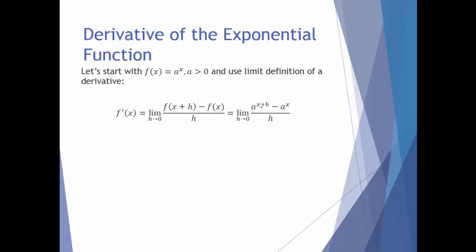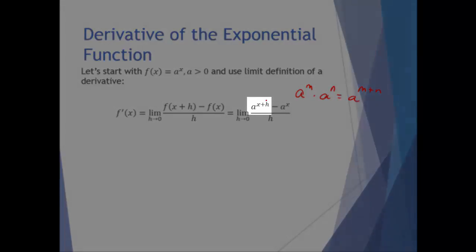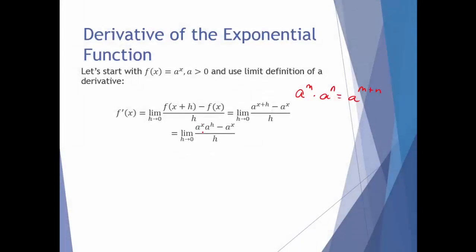I'm going to make use of the fact that this is an exponential function, which means I have laws of exponents on my side. We remember that a to the m times a to the n equals a to the m plus n. I'm about to use this in the opposite direction — a to the x plus h is the same thing as a to the x times a to the h.